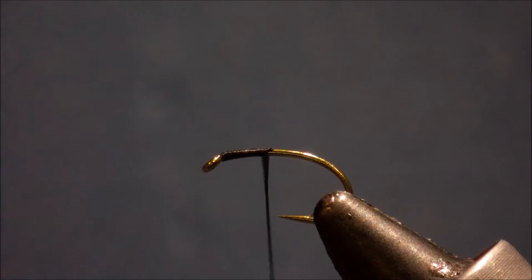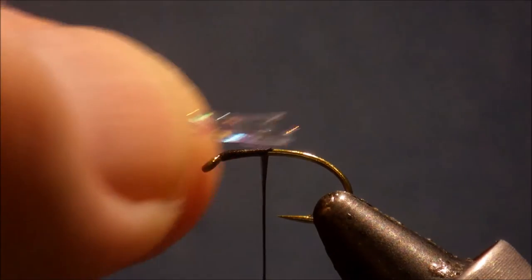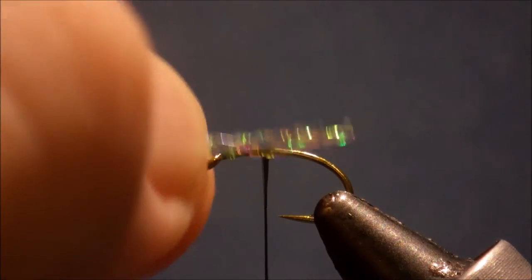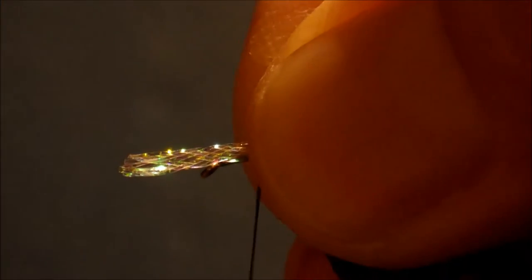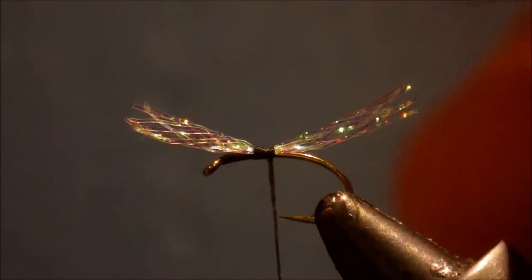So I've run on some black thread, just over the first third of the hook there. I'm going to take some Pearly Flatbraid from Lagartun. It's the same sort of stuff you'd use for bonefish bodies. I'm just going to catch in a short length of that, and you can pull off a couple of inches and it will do ten flies.